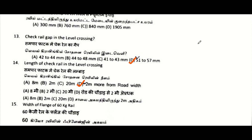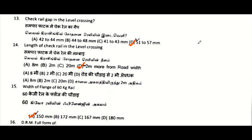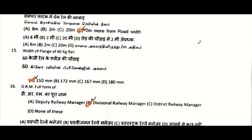Interval of distance pieces on platform line: 30 meters. Check rail gap in the level crossing: 51 to 57 mm.